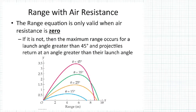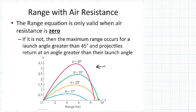The range equation is only valid when you're not dealing with air resistance. Air resistance acts against the direction of motion and cuts the range short. In real life with air resistance, the optimal angle for maximum range is actually about 35 degrees. Angry Birds is set up with no air resistance, which is why 45 degrees gives the greatest range there.